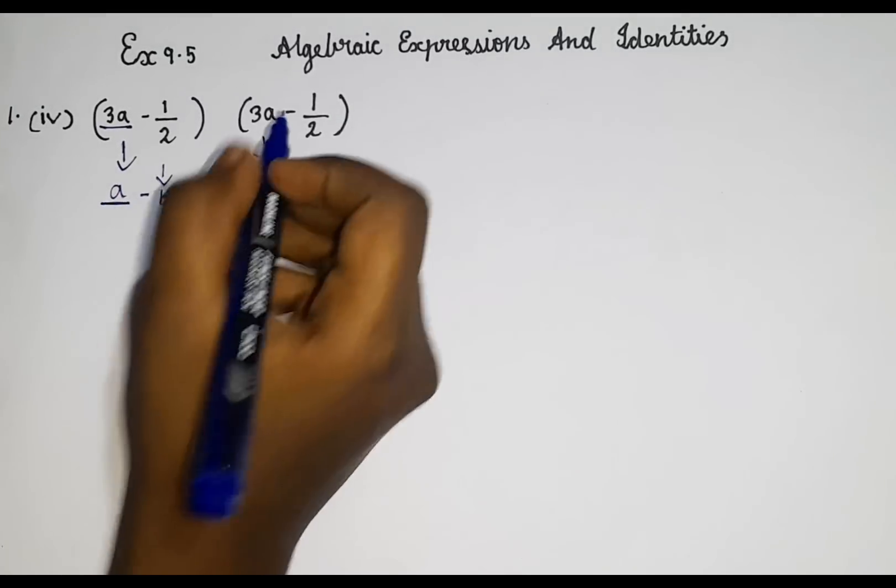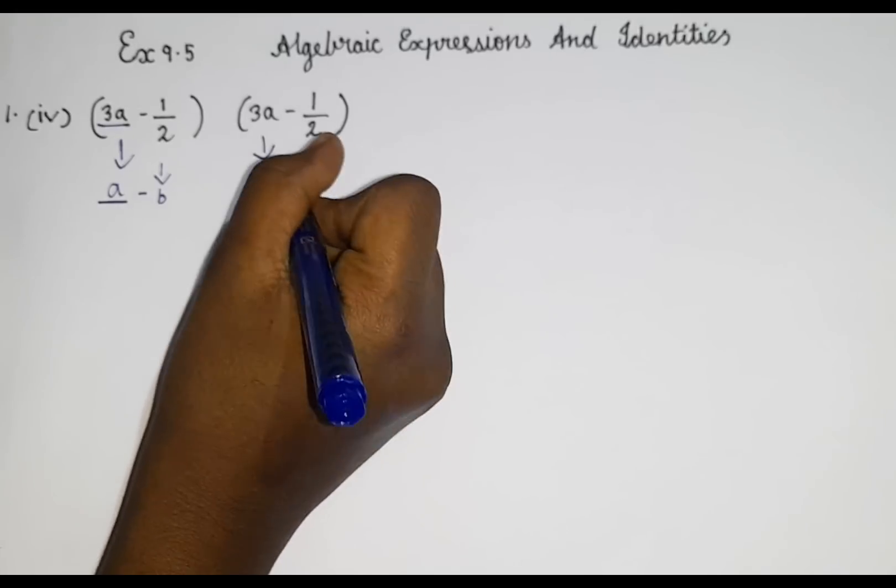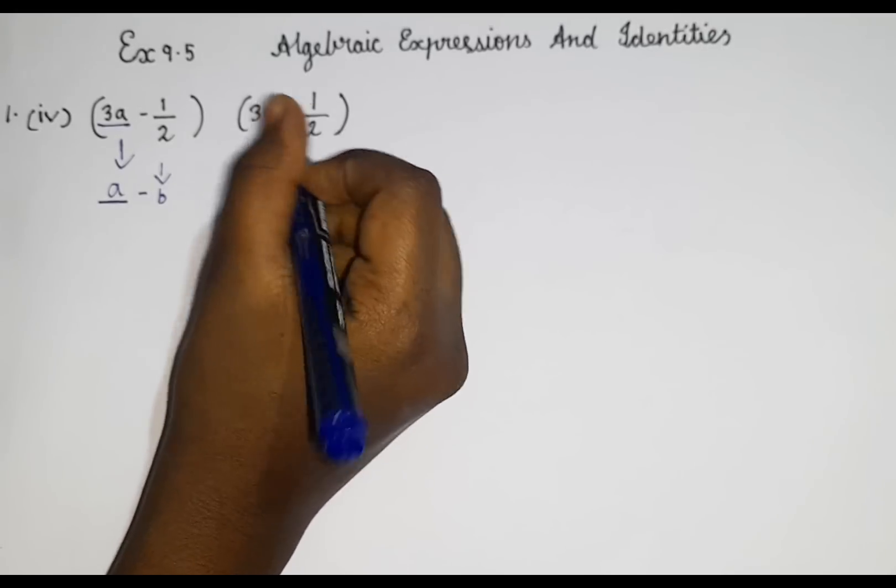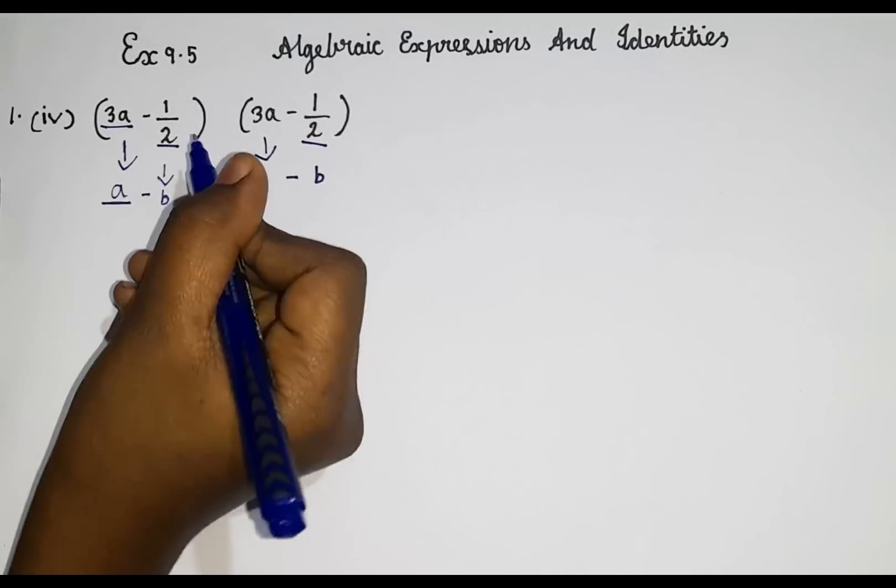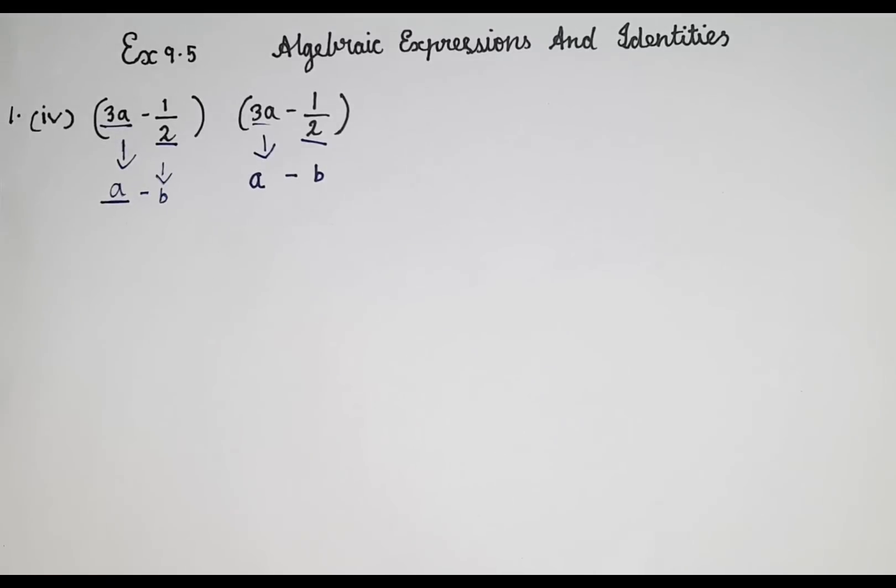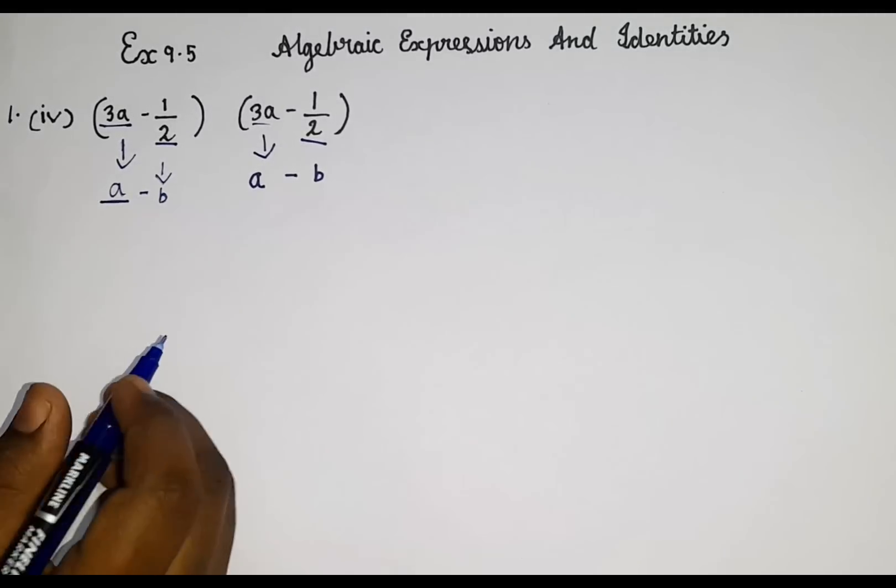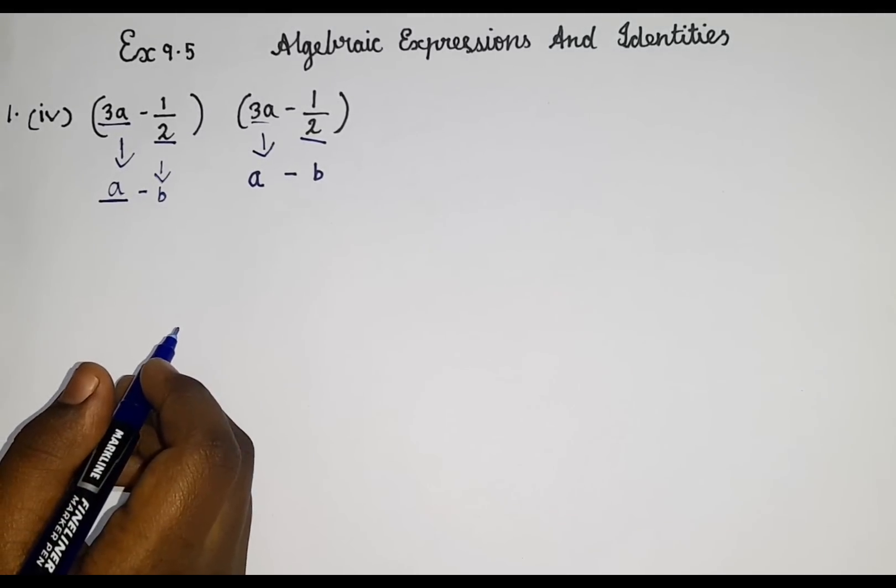So here also we will write it as a. Then again 1 by 2. Look, 1 by 2. That's why I wrote b there. So what did I mention in the previous video?